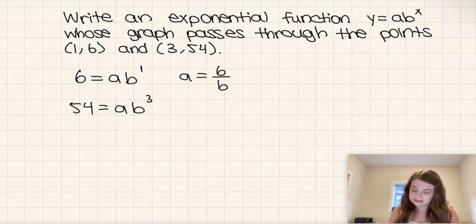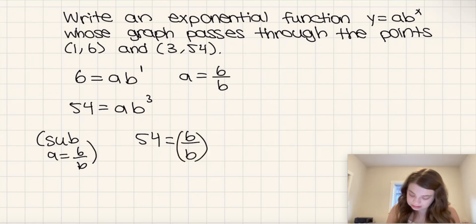And then I'm going to sub this equation a equals 6 over b into my second equation. So we are going to sub a equals 6 over b into this equation to get 54 equals 6 over b times b cubed. And now we're just going to continue solving for b.